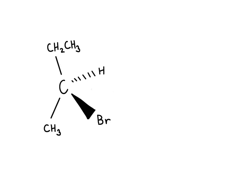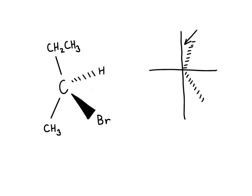What you need to understand when we do Fischer projections is two things. When I draw a vertical line in a Fischer projection, I am representing parts of a molecule that are facing away from me. While when I draw a horizontal line, I am representing parts of a molecule that are facing towards me.